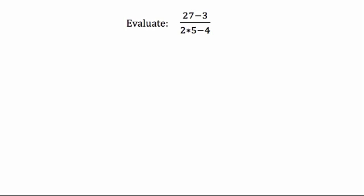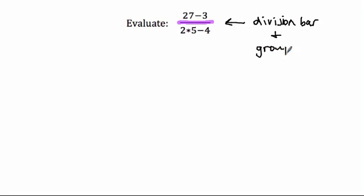The second problem is evaluating 27 minus 3 over 2 times 5 minus 4. The tricky part is the fraction bar in the middle. It represents division, but it also acts as a grouping symbol — meaning what's on top is treated as if it's in parentheses, and what's on the bottom is also treated as if it's in parentheses. So we must evaluate each part before dividing.